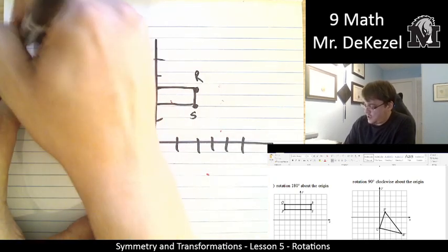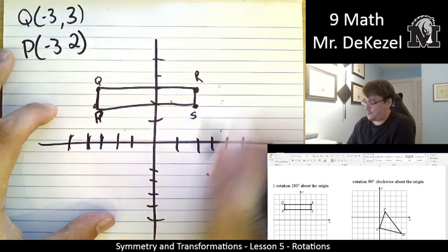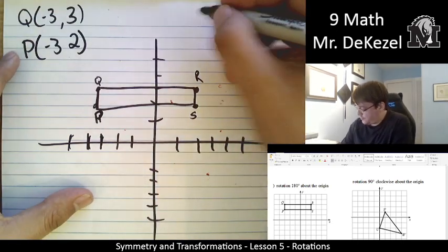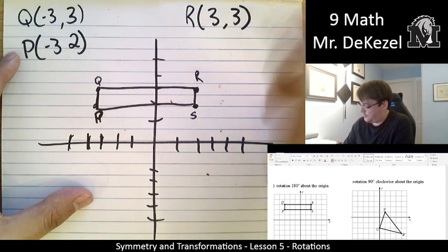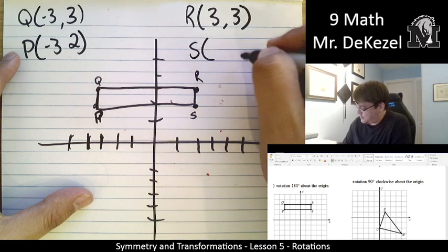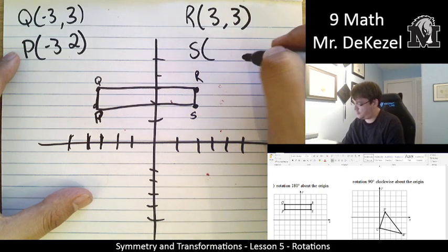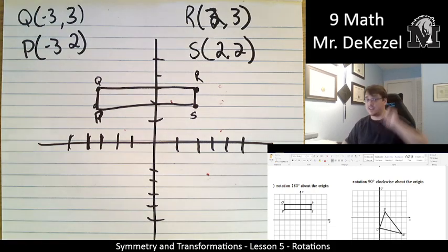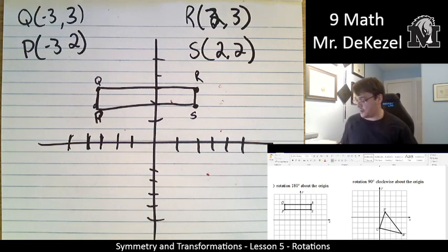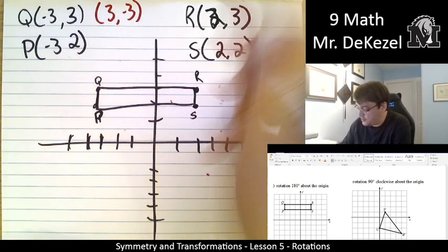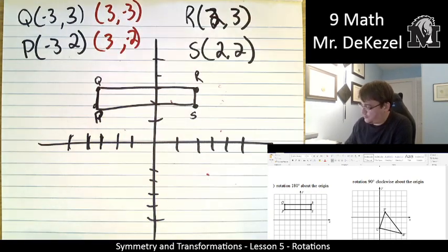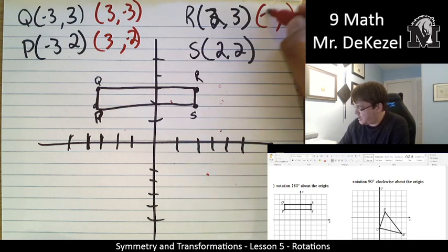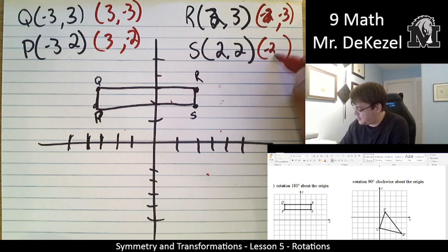That's P. P is the point minus 3, 2. We also have the point R, which is 2, 3. And then point S, which is 2, 2. What we're going to do when we rewrite all these is we're going to simply switch the signs of each one. So this one becomes 3 minus 3, this one becomes 3 minus 2, this one becomes minus 2 minus 3, and this one's minus 2 minus 2.